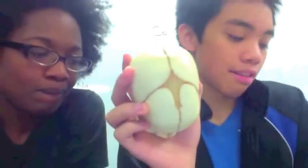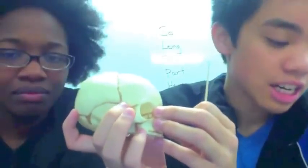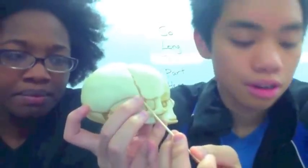This is your fetal skull — baby Larry. On this one you have to know the fontanelles, and there are only four. Right here is the anterior fontanelle. On the back you have the posterior fontanelle. Then you have the mastoid fontanelle, because your mastoid process would be right here. And then right here is the sphenoidal fontanelle, because your sphenoid bone would be right here.